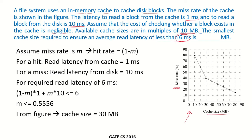Let us assume that the miss rate is m, which means the hit rate would be 1-m. The miss rate is when the required block is not found in the cache, and a hit is when the required block is available in the cache. For a hit, the read latency from the cache is 1 ms. If there is a miss, the read latency from the disk is 10 ms. The cost of checking whether a block exists in the cache is negligible.